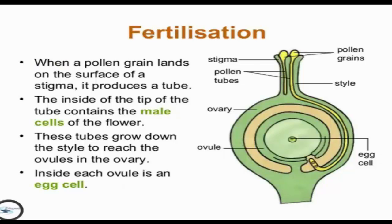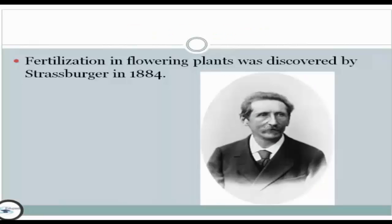When a pollen grain lands on the surface of a stigma, it produces a tube. The tip of the tube contains the male cells of the flower. These tubes grow down the style to reach the ovules in the ovary. Inside each ovule is an egg cell. Fertilization in flowering plants was discovered by Strasburger in 1884.